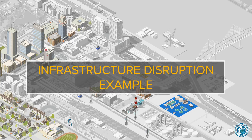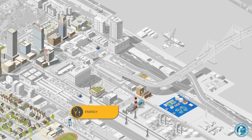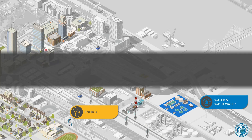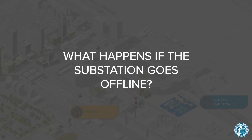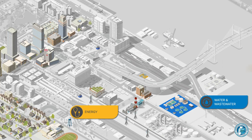Dependencies can introduce potential vulnerabilities into an infrastructure system. For instance, what happens if a substation goes offline and is unable to supply electricity to a nearby water treatment plant?